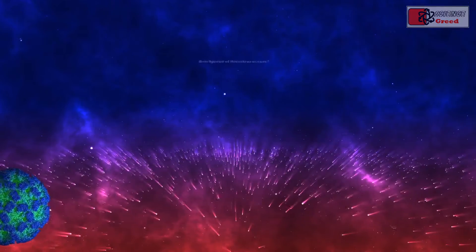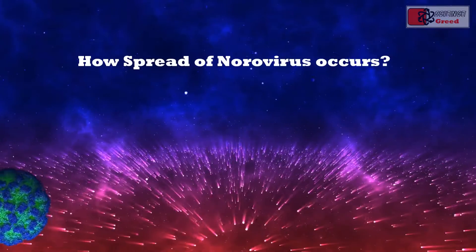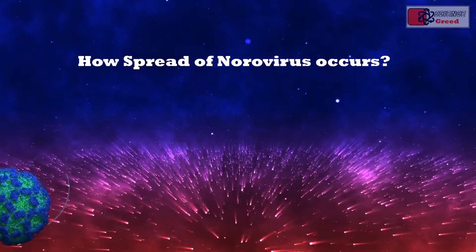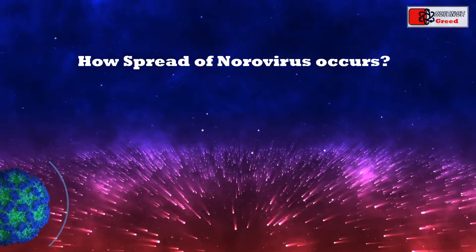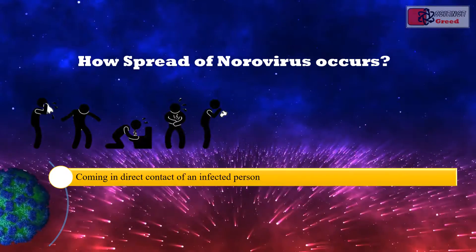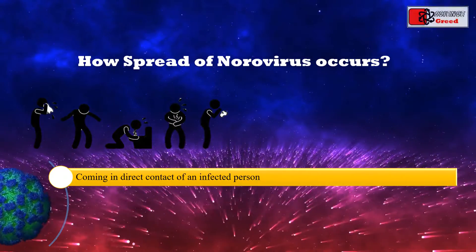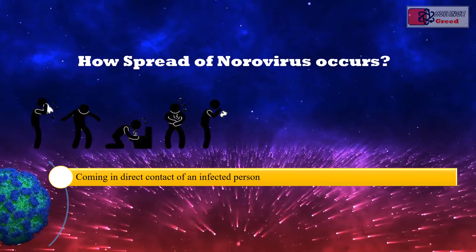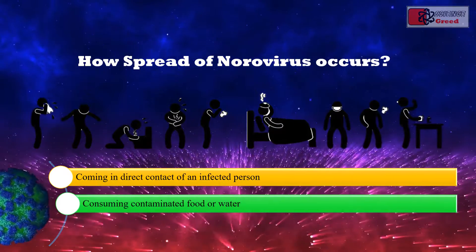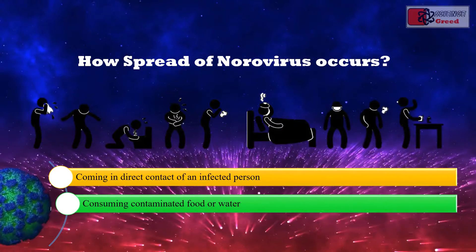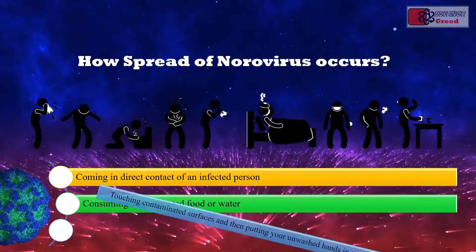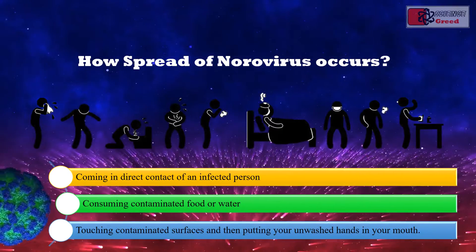The spread of norovirus is very similar to the way other viruses enter the human body. A person can contract norovirus by coming in direct contact with an infected person, consuming contaminated food or water, and touching contaminated surfaces and then putting unwashed hands in your mouth.